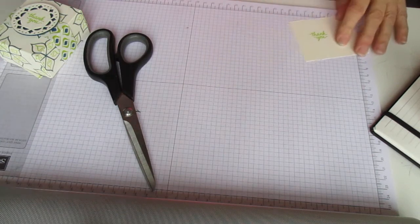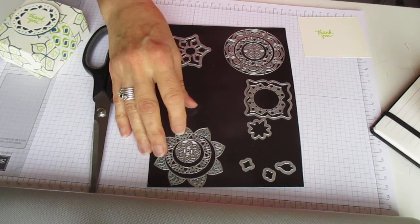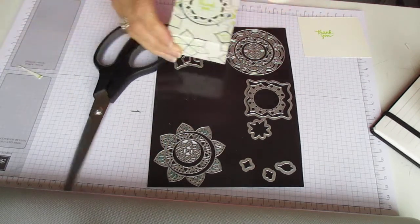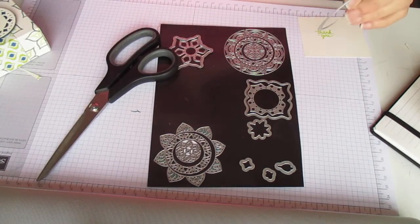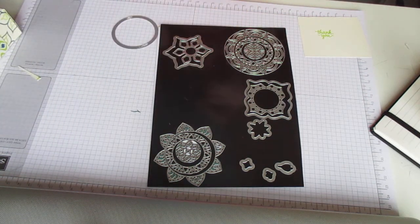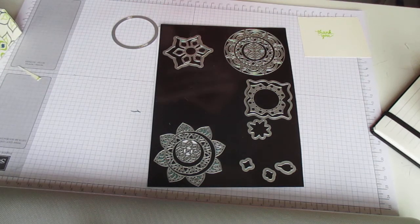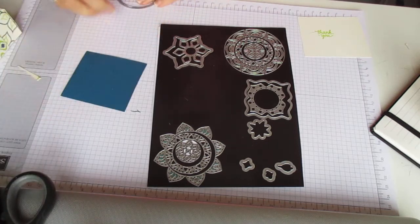It might actually have been easier to die cut it first. I've got my circle from the Nesting Circles, which I'm going to be using. That's what I've used to cut out the blue, which is Dapper Denim, one of the ink colors. It'll be around for another 12 months, and they've very cleverly used it with this suite.